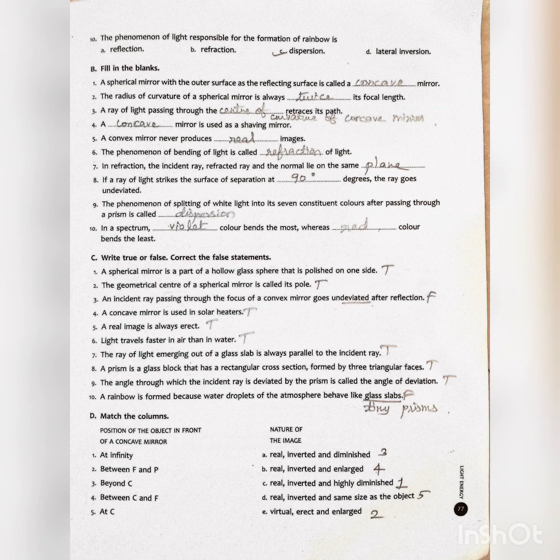Tenth one: In a spectrum, dash color bends the most whereas dash color bends the least. Answer is violet color bends the most whereas red color bends the least.